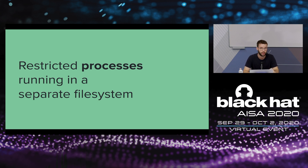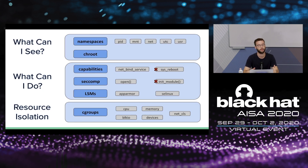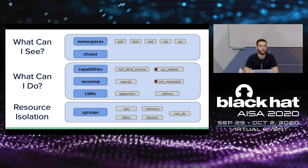You've probably heard about some of those isolation primitives. Namespaces define what a process or container can see — for example, the PID namespace defines what other processes a container can see. Then you have primitives more related to what a container can do, like capabilities and seccomp. Capabilities are basically privileges in Linux — you wouldn't want a container to have the sysreboot capability, as that would allow it to shut down the machine. Finally, control groups (cgroups) are about resource isolation and limiting the container's access to host resources.